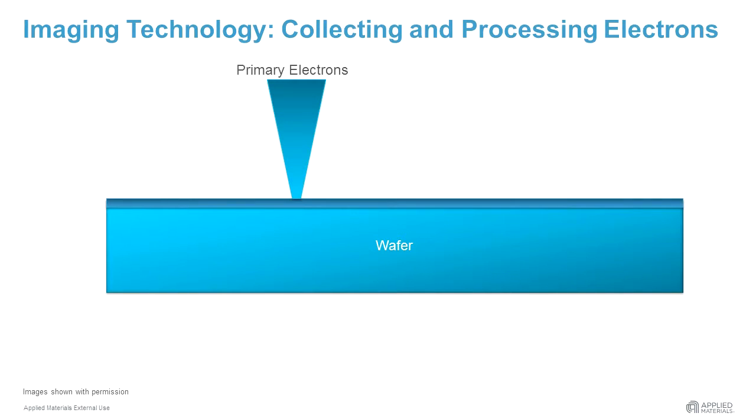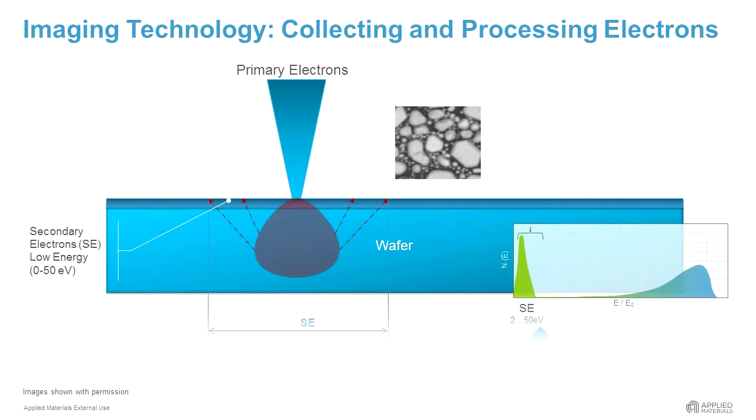When the primary electrons penetrate the wafer, they are scattered into an onion-shaped volume. In this scattering process, low energy electrons, so-called secondary electrons or SE, are generated which can leave the wafer only from a very thin surface layer. This signal is very sensitive to surface structures.